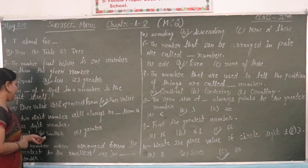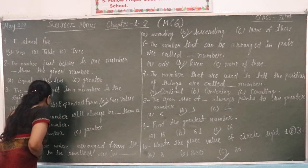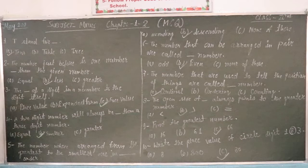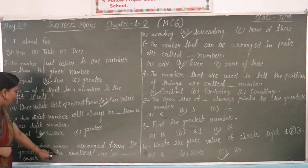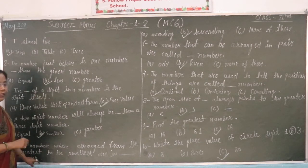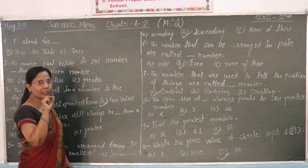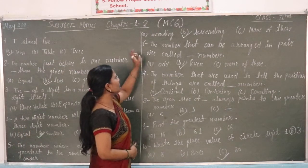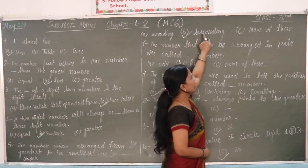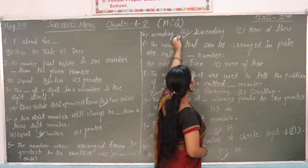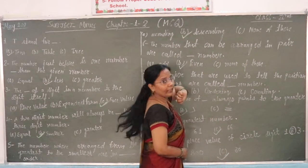The numbers arranged from greatest to smallest are in blank order. When we look at greatest and smallest numbers, how do we arrange these? Options: ascending, descending, non-office. The answer is descending order.